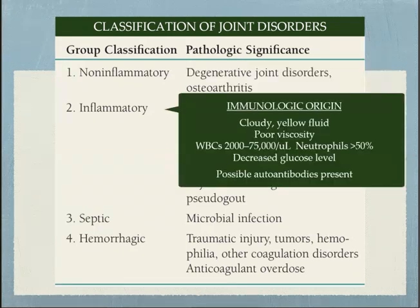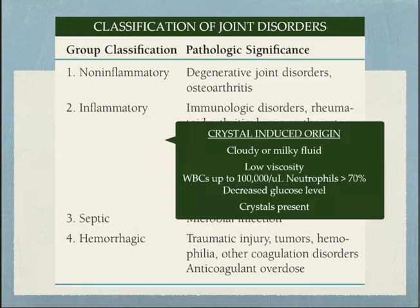Next is inflammatory disease. There are two types. The immunologic inflammatory type may show cloudy yellow fluid with poor viscosity, extremely high WBC counts predominated by neutrophilic cells, and decreased blood glucose levels. There may also be autoantibodies present within the synovial fluid. The crystal-induced inflammatory type often shows cloudy milky fluid, low viscosity, extremely high WBC count, neutrophils making up the majority, decreased glucose levels, and crystals may be identified.